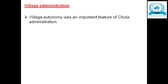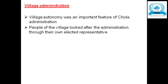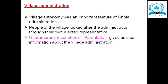Now let us see the village administration in detail. Village autonomy was an important feature of Chola administration — the villagers themselves took care of their administration. People of the village looked after the administration through their own elected representatives. The Uttarameruru inscription of Paranthaka I gives clear information about the Chola village administration.